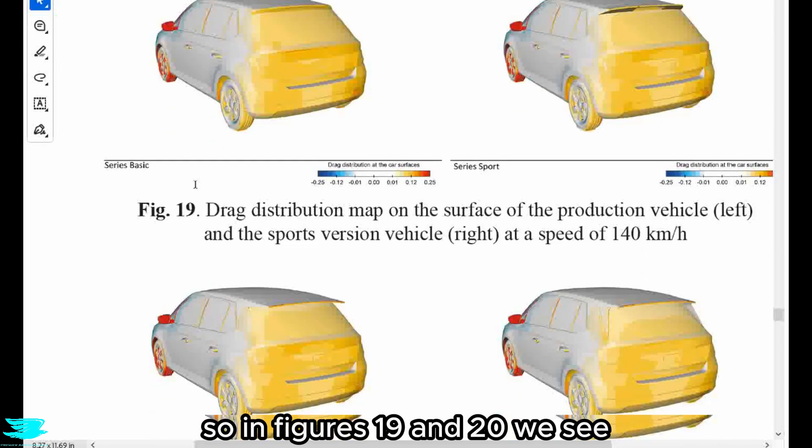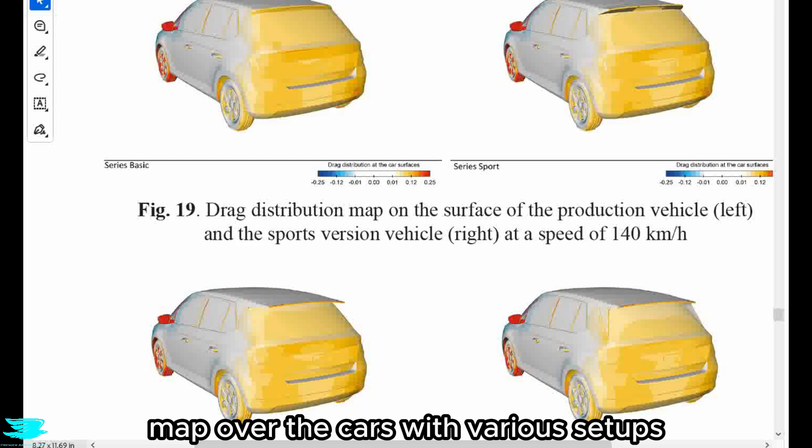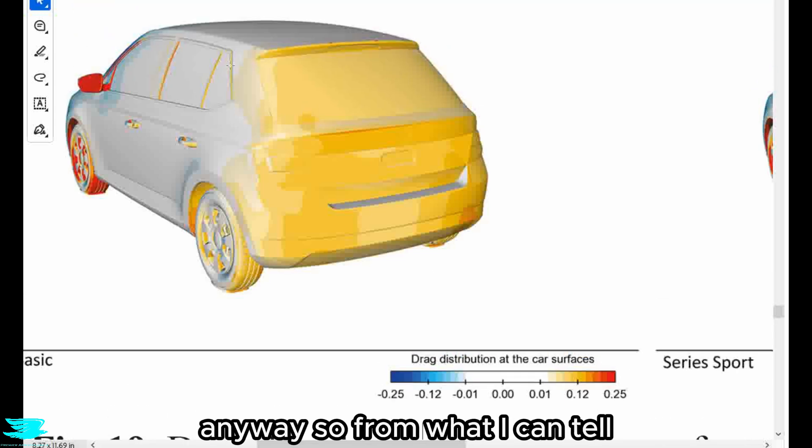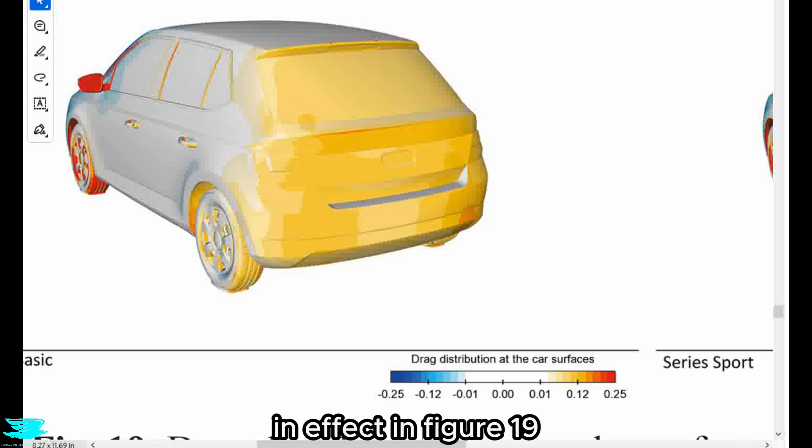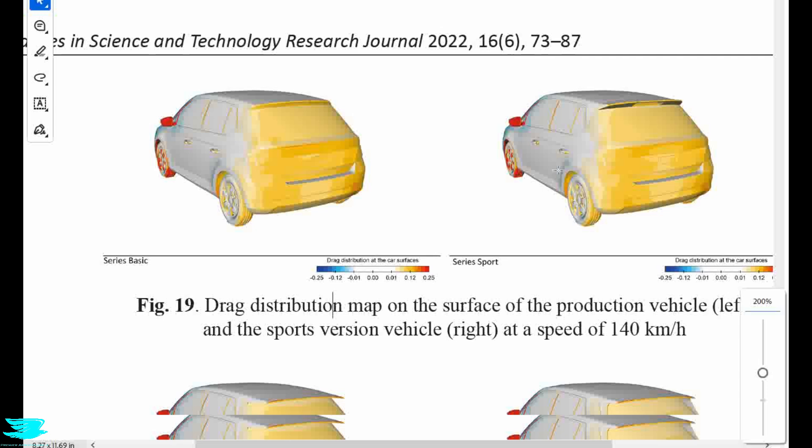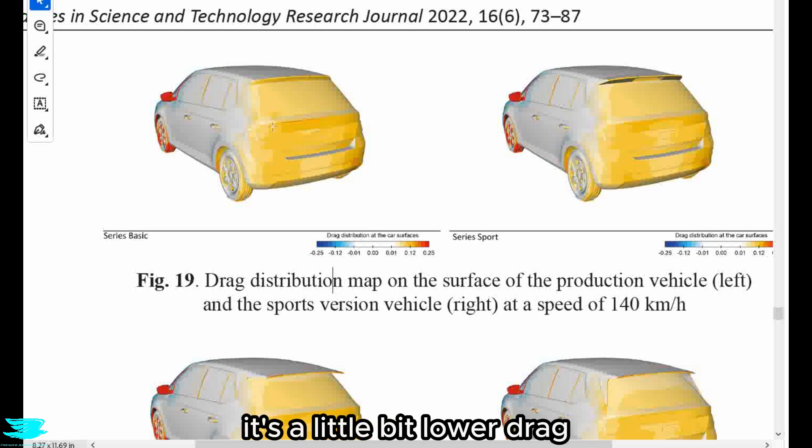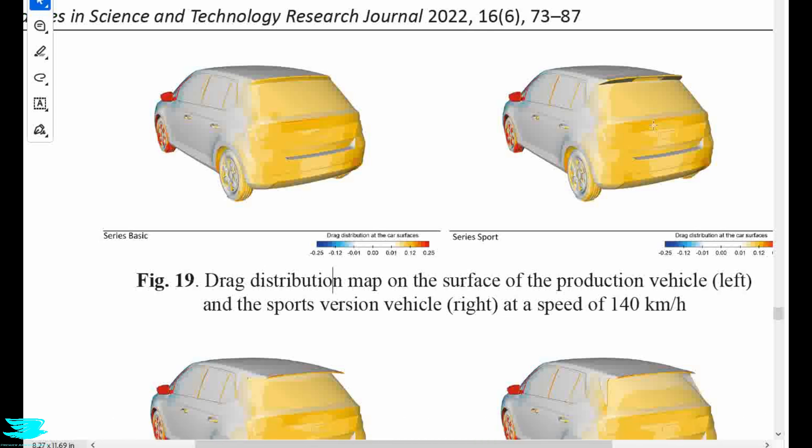So in figures 19 and 20, we see the researchers here have called the drag distribution map over the cars with various setups. So from what I can tell, this drag distribution is where the drag is produced in effect. And in figure 19, we see the effects of adding the little spoiler onto the regular car, so that tiny little one there. And there really only seems to be a slight difference around maybe where the car's badge is. So in the middle section here, it's a little bit lower drag, so that's good. The rest of the face looks pretty similar though. So this spoiler here doesn't seem to make too much of a difference other than this badge area in the center of the actual back here.